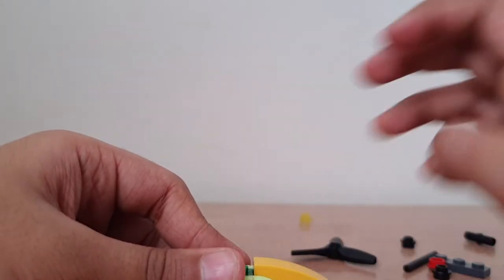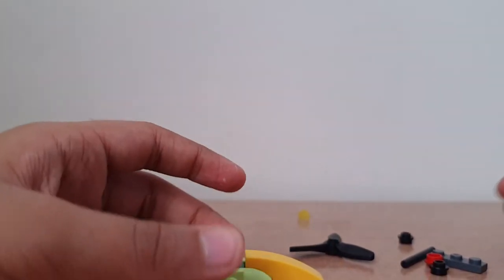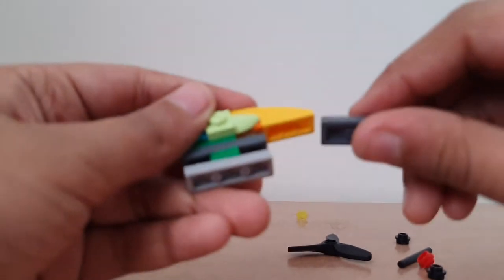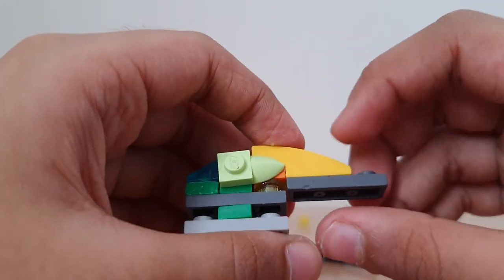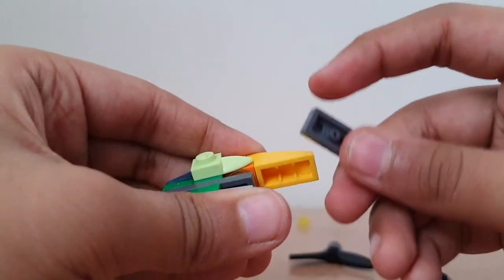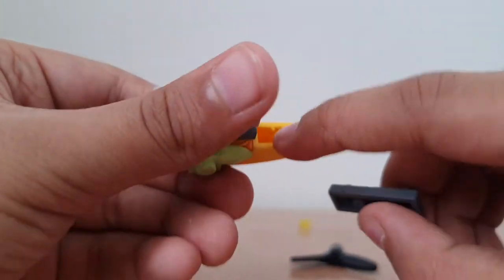Now this 1x3 plate has to be kept behind at the bottom of this brick here.